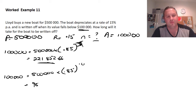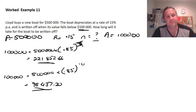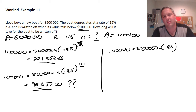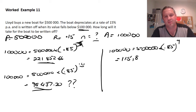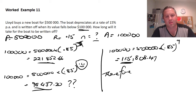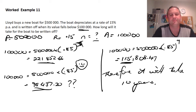For n = 10, the calculator gives $98,437.20, which is below $100,000. To confirm, we also check n = 9: A = 500,000 × (0.85)^9, which gives $115,808.47 — still above $100,000. Therefore, n = 10 is our answer. It will take 10 years before the boat is written off.